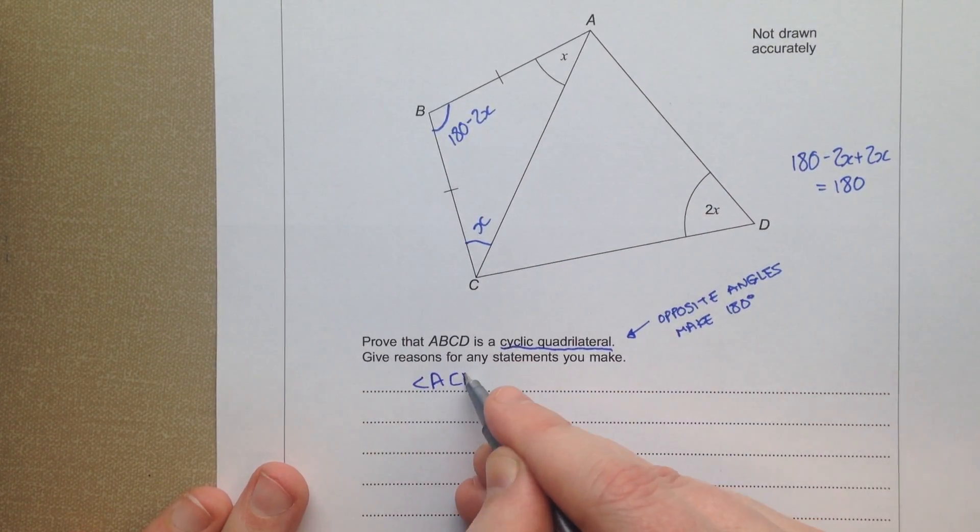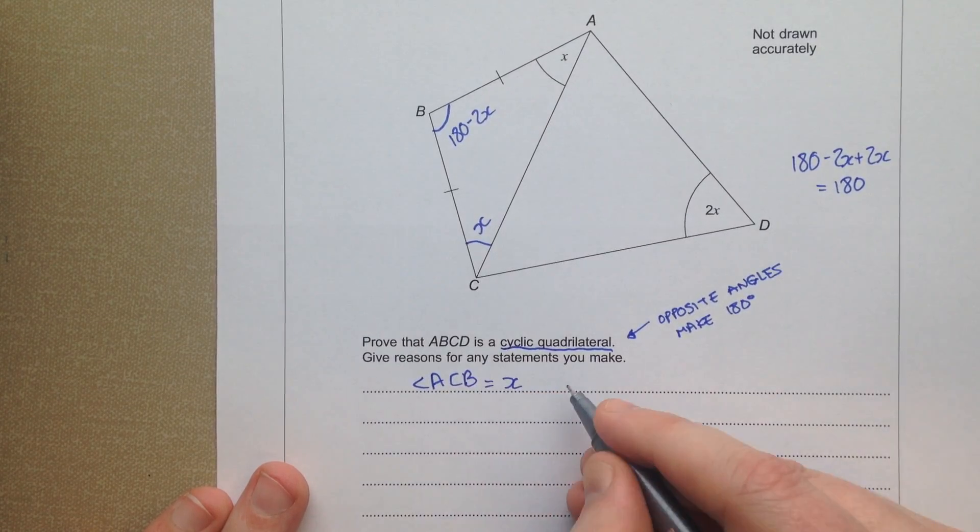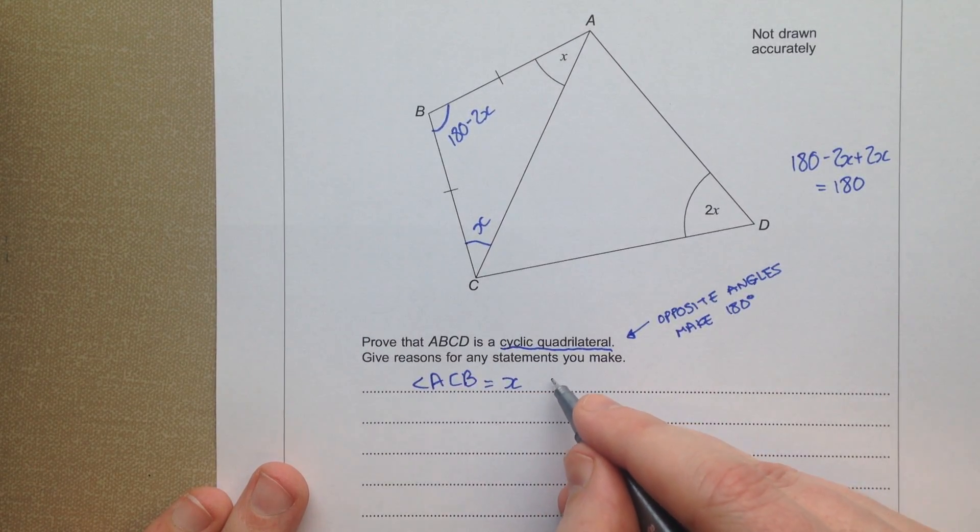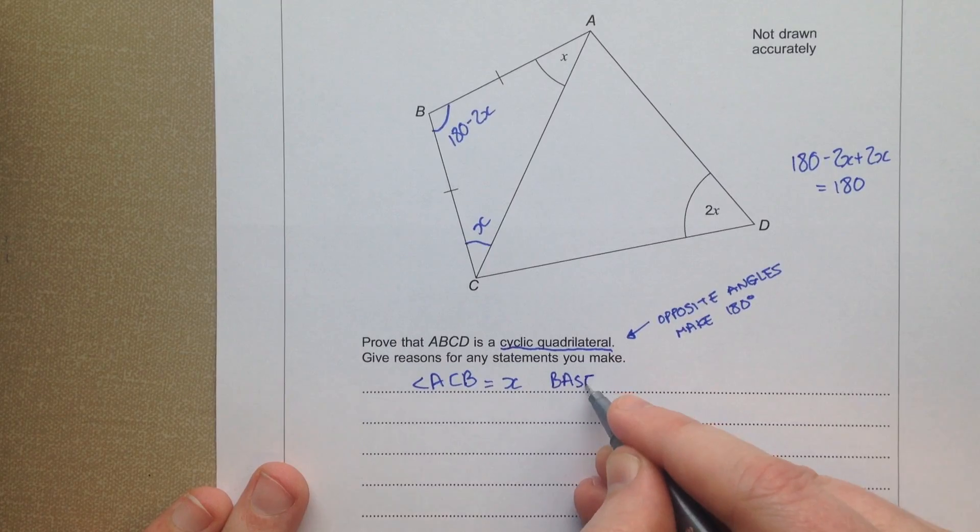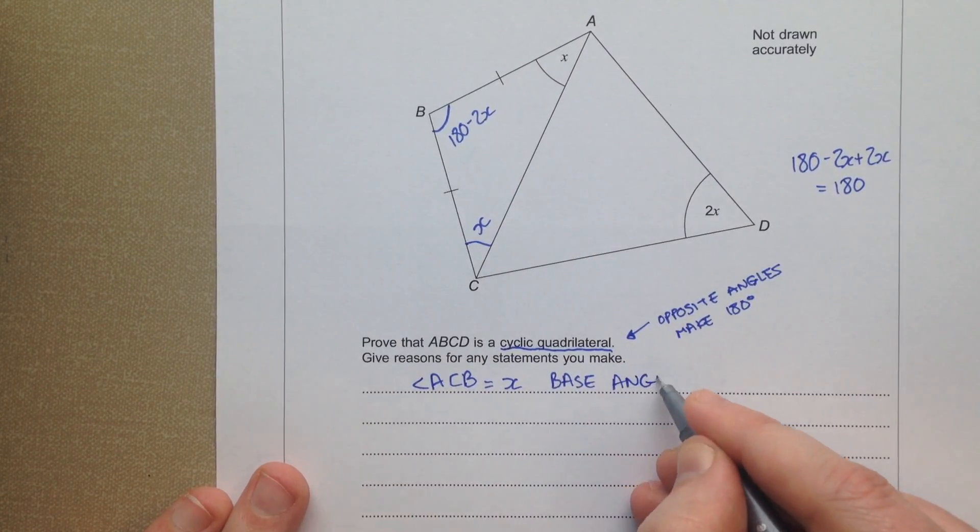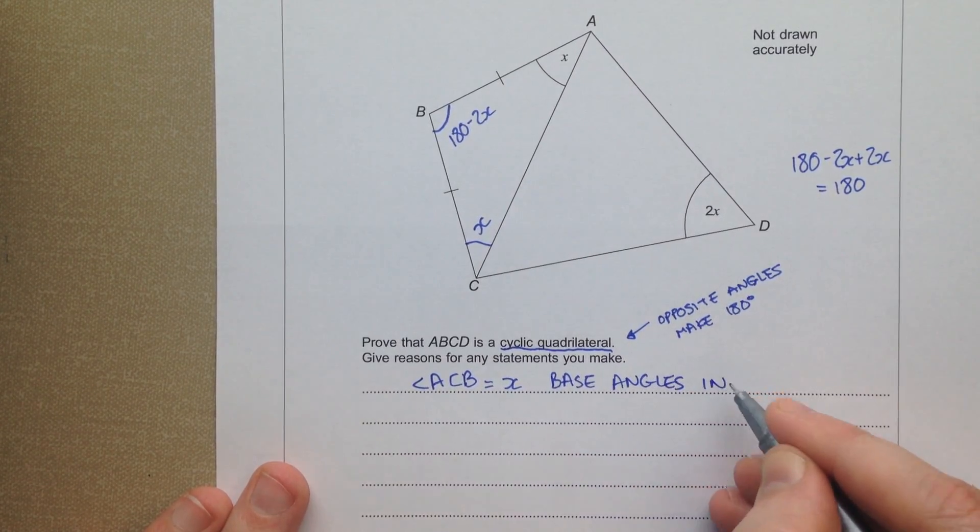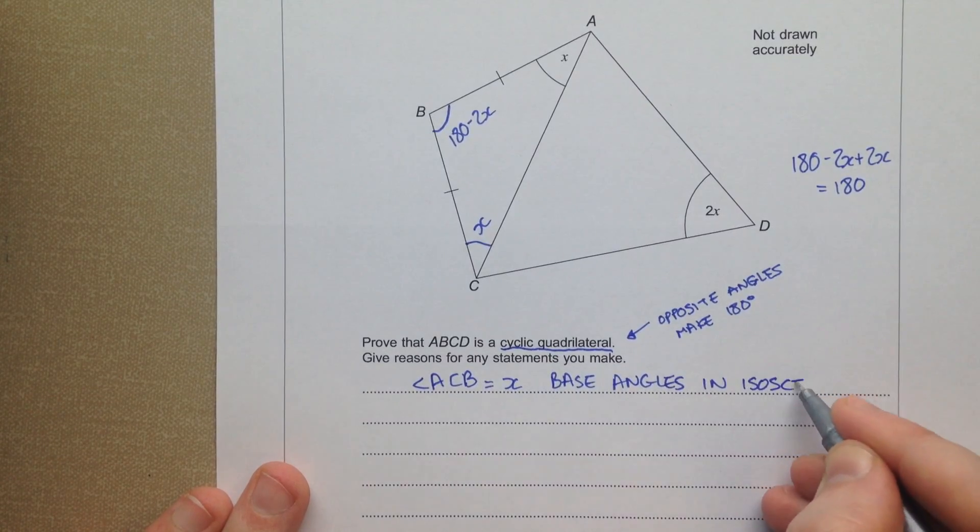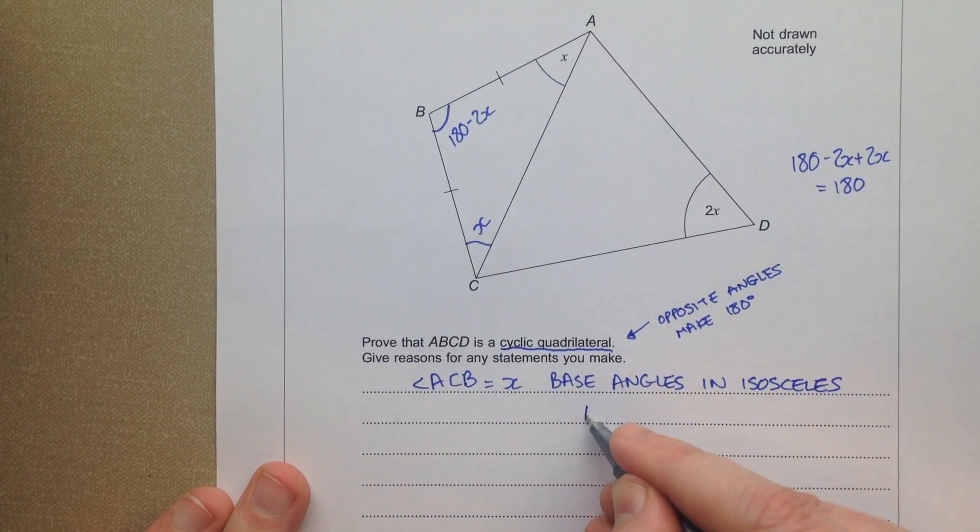Angle ACB equals x. And the reason is that base angles in isosceles are equal.